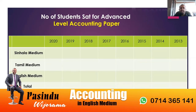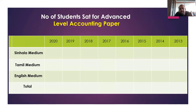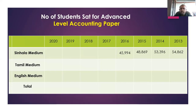How many competitors are there in your Advanced Level examinations who write the accounting paper? We have a summary from 2013 to 2020. Unfortunately for recent years I was not in a position to break it down into Sinhala medium, Tamil medium, and English medium students, but I can give the total. If you take 2016, that's about 45,000 students.